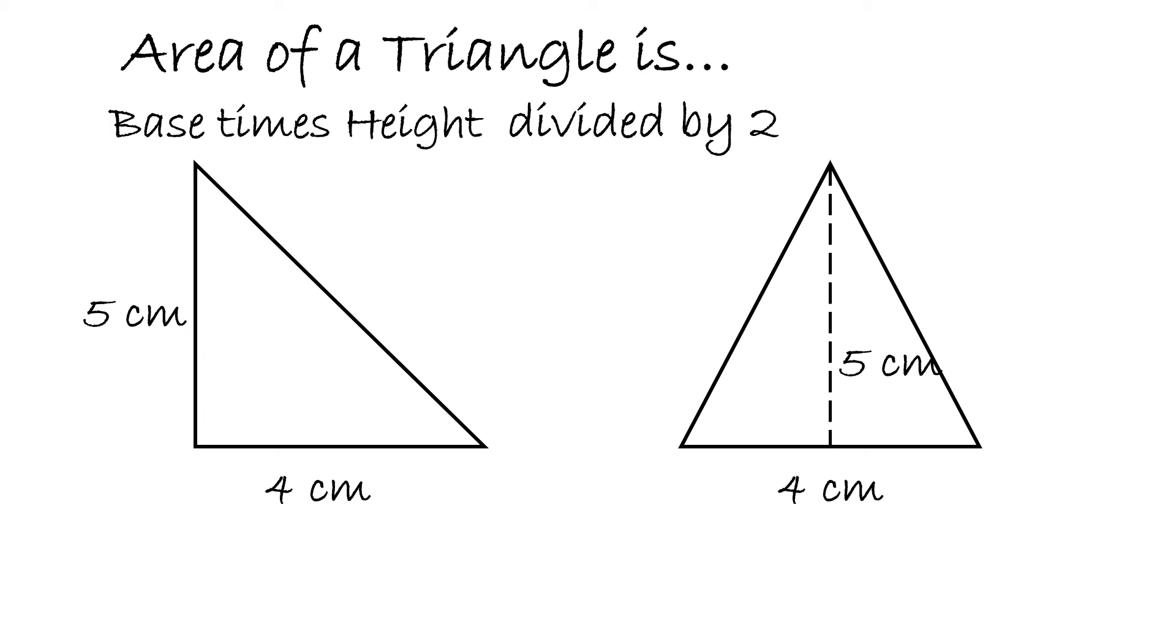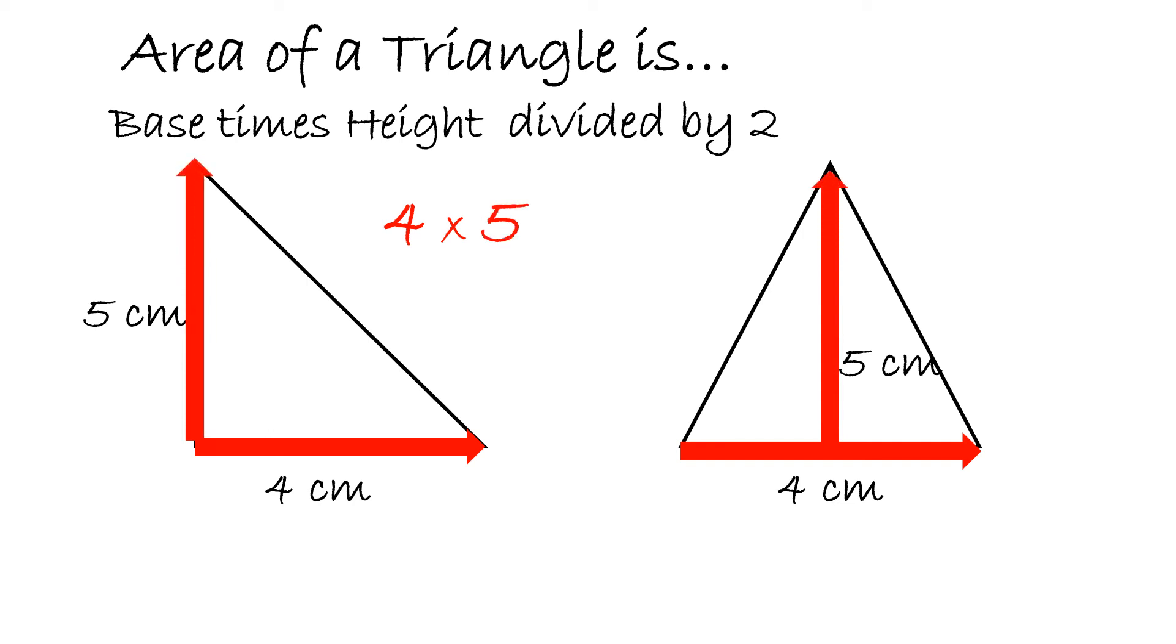Now these two triangles look different, but their area is the same. And so basically, we will take the first thing, the base, which is 4 centimeters. We will multiply it by the height, which is 5 centimeters. And 4 times 5 equals 20.